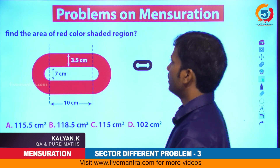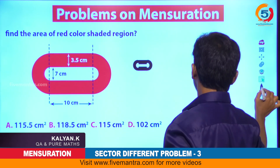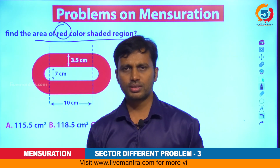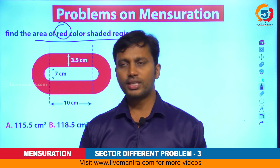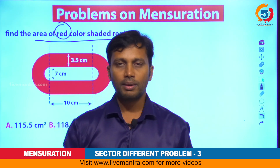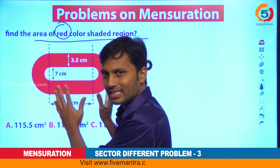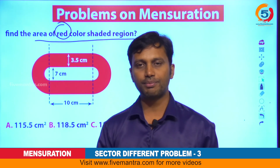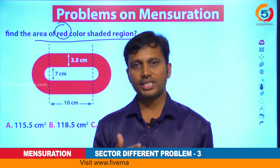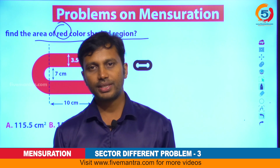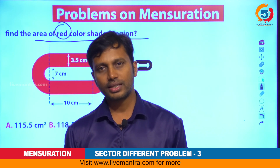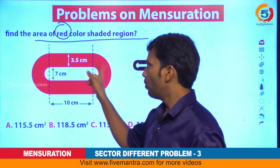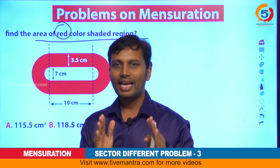The question is to find the shaded region — the red colored shaded portion. This problem is not difficult at all, but if you look at it as given, it will seem very difficult. Why? Because this shape is not directly found in mensuration basics — not among triangles, circles, quadrilaterals, or hexagons. No single basic shape matches this figure directly.